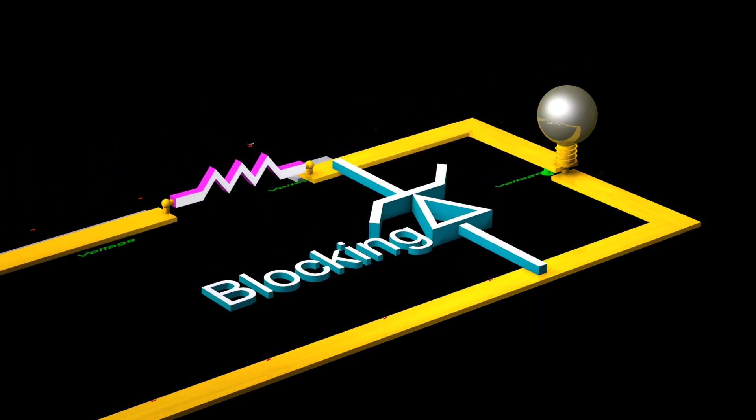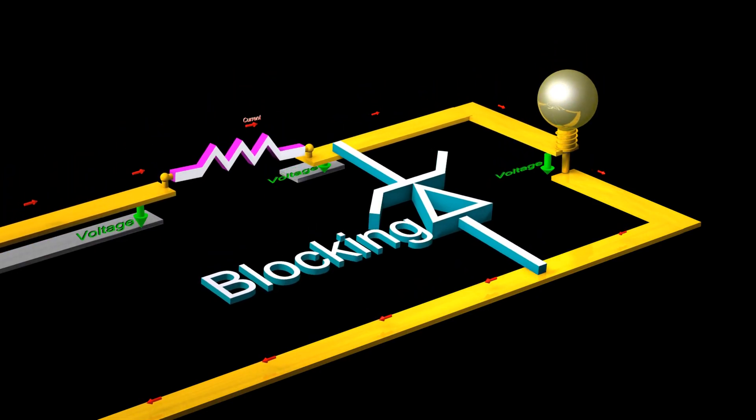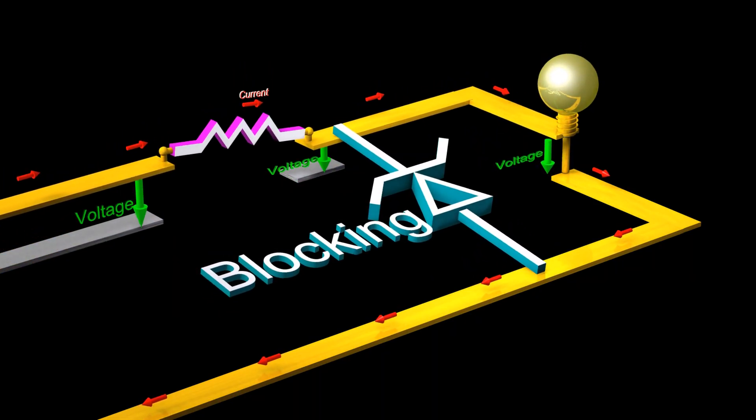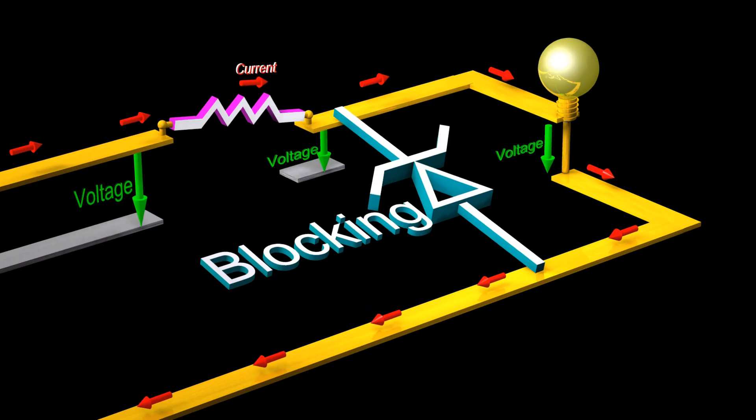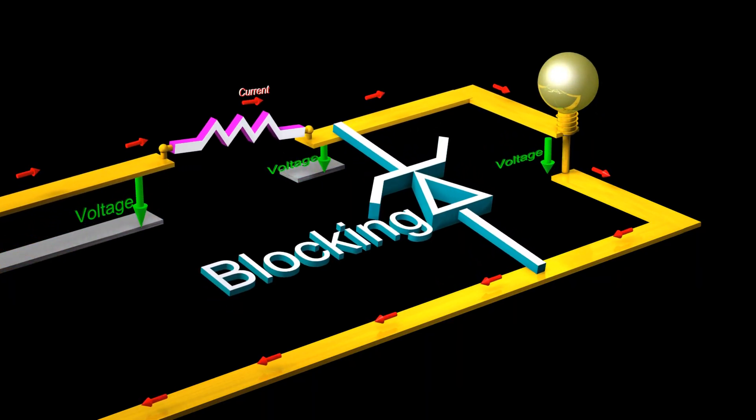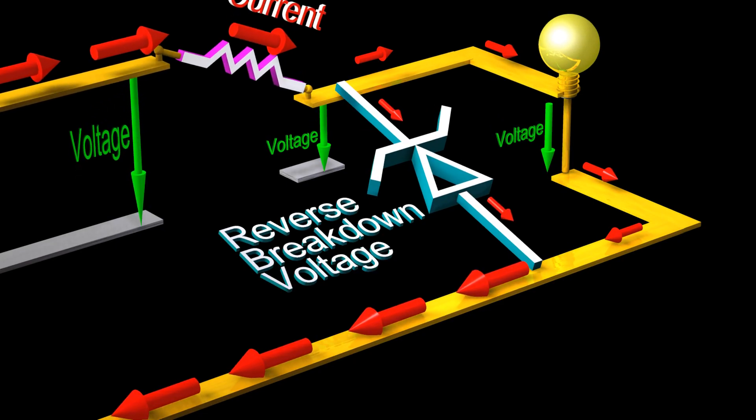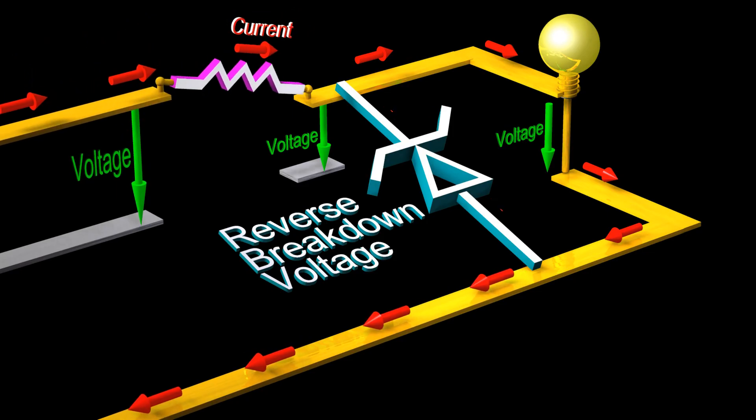If the intended input voltage is always lower than the breakdown voltage, then the Zener diode can be used to protect against transient overvoltage conditions that could damage the output.